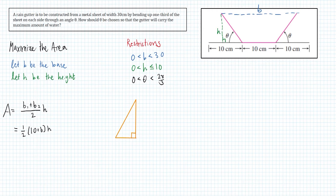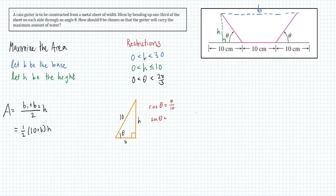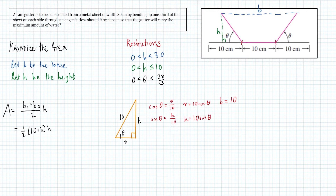The right triangle is created by the sides of h, 10, and we have an angle theta, and at the bottom let's call it x. Our trig ratios: cos theta is adjacent over hypotenuse, or x over 10; sine theta is opposite over hypotenuse, or h over 10. Rewriting these: x equals 10 cos theta, h equals 10 sine theta. And b can be written as 10 plus 2x, or 10 plus 20 cos theta.